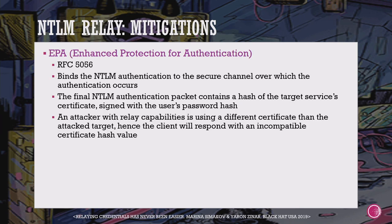The second mitigation is EPA — Enhanced Protection for Authentication. The goal is to protect NTLM authentications from being relayed over a TLS session by binding the NTLM authentication to the TLS session. This is implemented by adding a channel binding field to the last NTLM authenticate message, based on the hash of the target service certificate. A relayer using a different certificate would provide an incorrect channel binding field, causing the attack to fail.